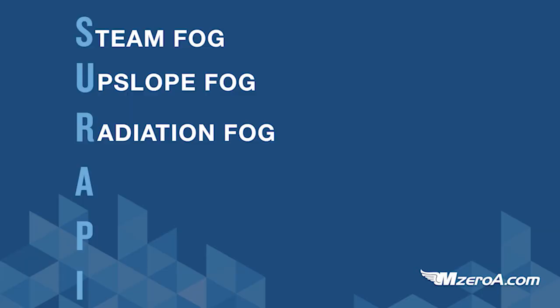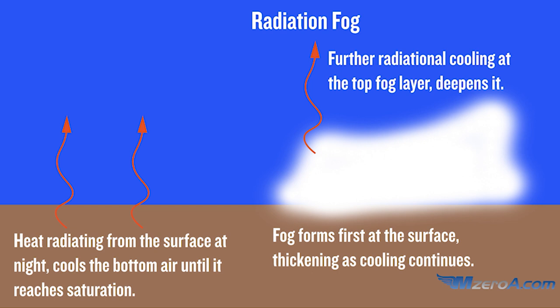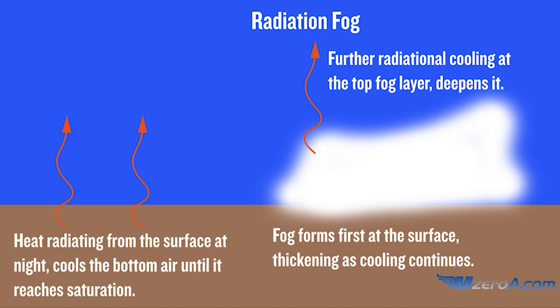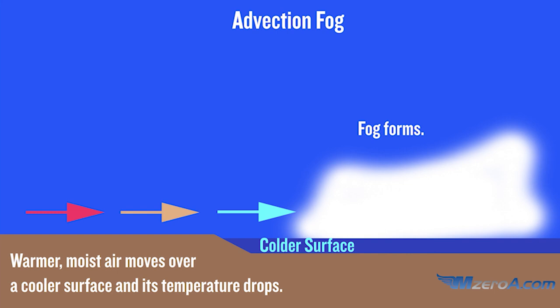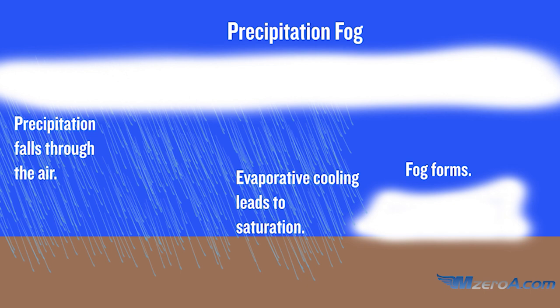Upslope fog needs unstable air and wind to form as it is literally pushed up the slope. Radiation fog forms when the air over the ground cools on a very still night. It forms very quickly and is extremely thick — it wants no wind. Advection fog forms when warm air moves over a colder surface and is common along coastal areas in the winter. Advection fog needs wind — it requires wind to form. Precipitation fog, sometimes called precipitation-induced fog, happens when rain falls but evaporates before it hits the surface — the trees can disappear and then magically reappear when the rain stops.